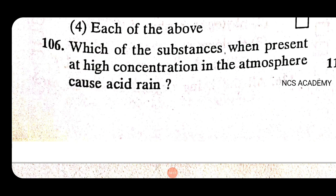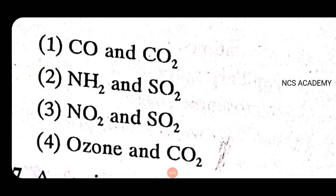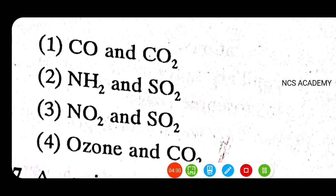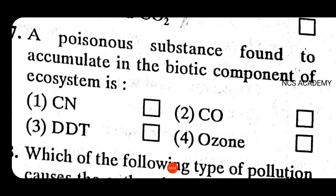Which substance, when present in high concentration in the atmosphere, causes acid rain? The right answer is option three. This substance causes acid rain.